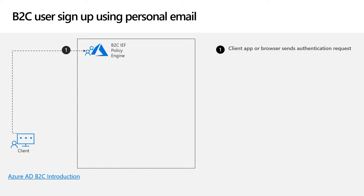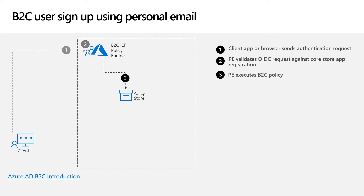The flow begins when you click to sign up from your application. The authentication request includes your B2C policy ID in the URL. The request reaches an endpoint called yourtenantname.b2clogin.com. The policy engine validates the OpenID Connect request by comparing its parameters to the application registration stored in the core store. The policy engine then evaluates the policy specified in the URL into memory and executes its steps sequentially.